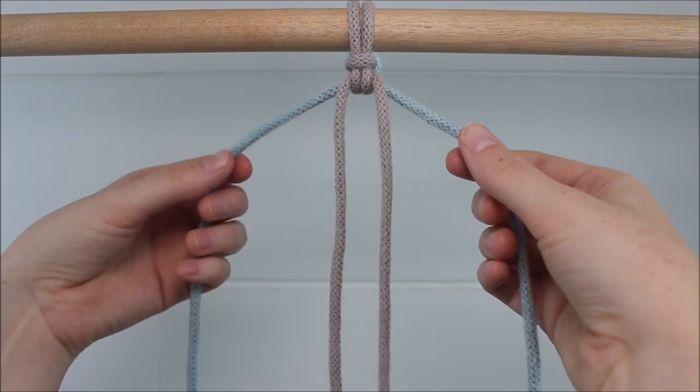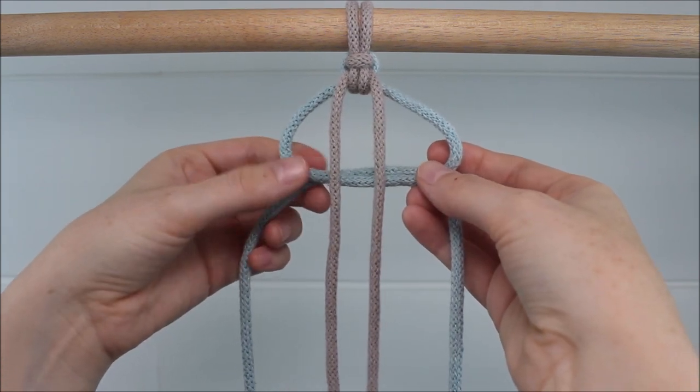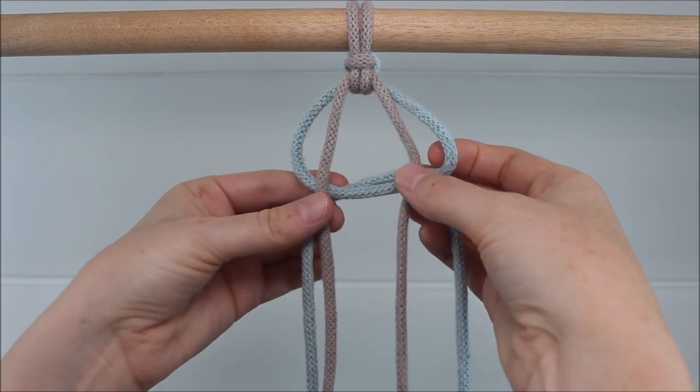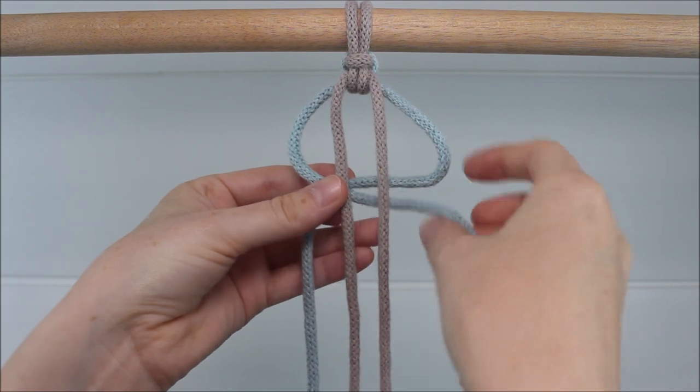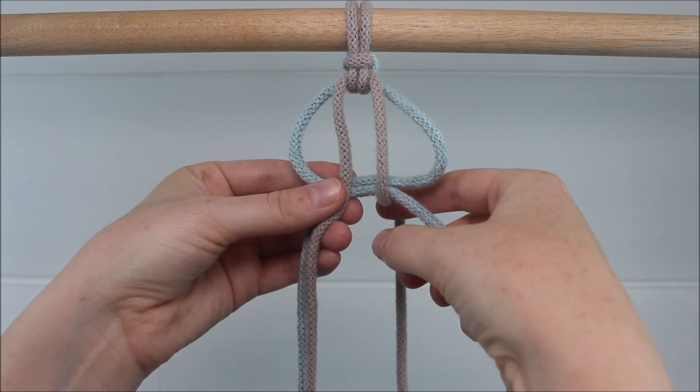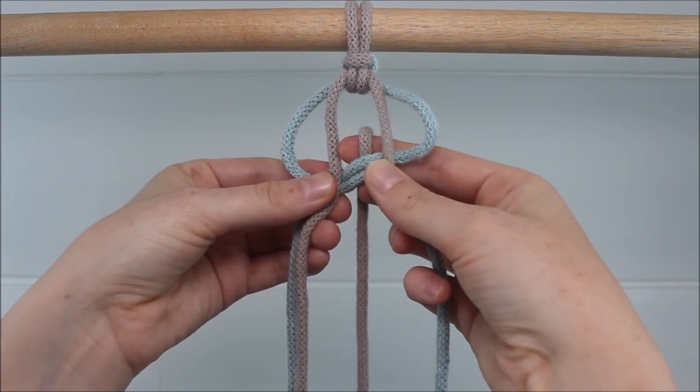Now we're going to take those same outer cords back behind, crossing the left over the right to form our loop. This time though, we're going to send the two middle cords through the center loop here. So instead of doing these outer loops, we're going to go right in between the two center cords. So take that right middle cord behind to go through the center loop.